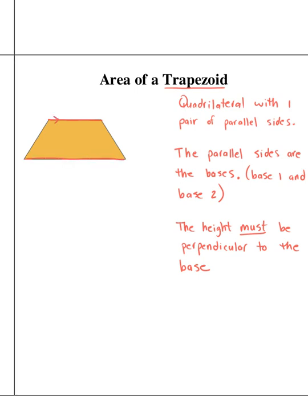We use arrows to mark sides that are parallel to each other. This is base 1 and this is base 2.